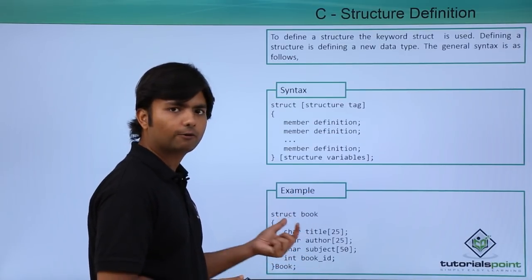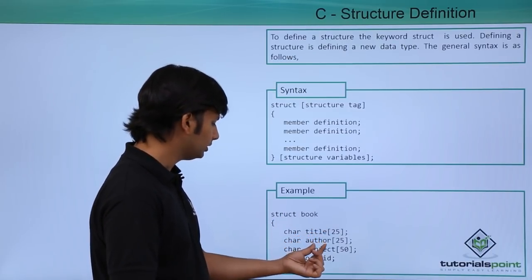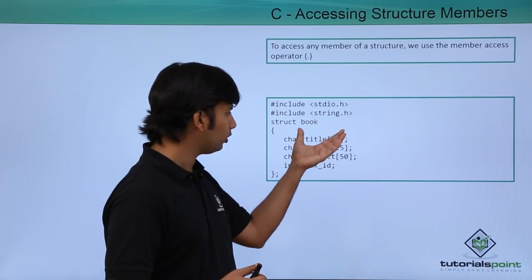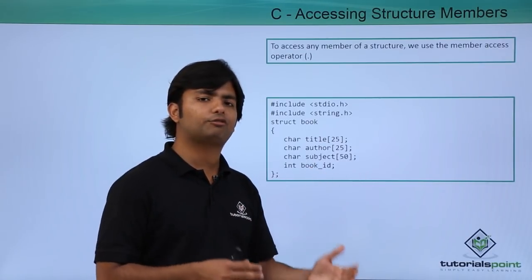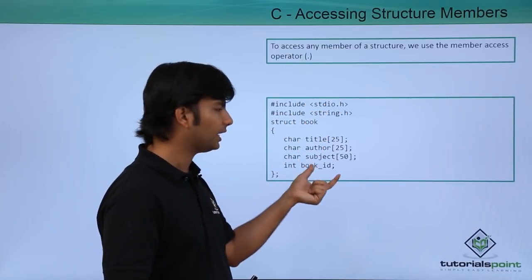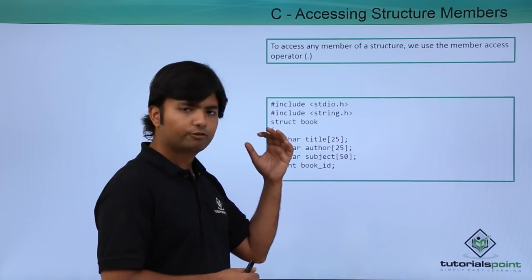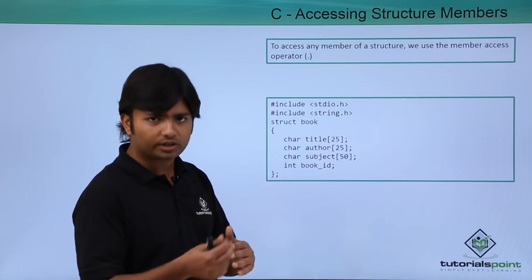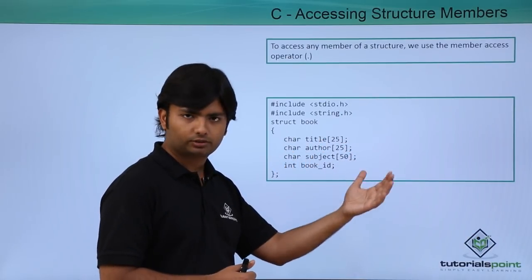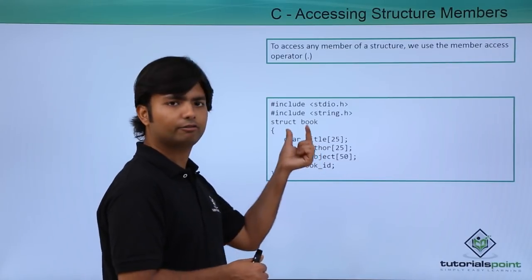After the data type we specify the name of the identifier — so 'book' here is the name of the identifier. This book is a variable of struct book type, inside which you have title, author, subject, and book ID. Now if you want to access any element of this structure, along with the variable name you put a dot operator and then you can use any identifier inside it. So dot will be the separator between the variable name and the field inside it.